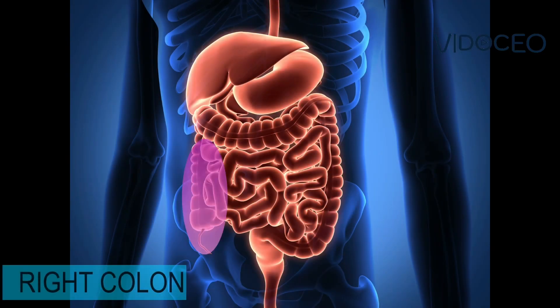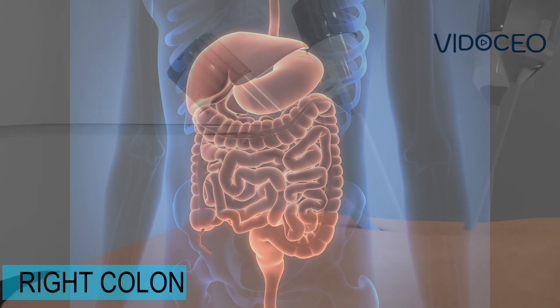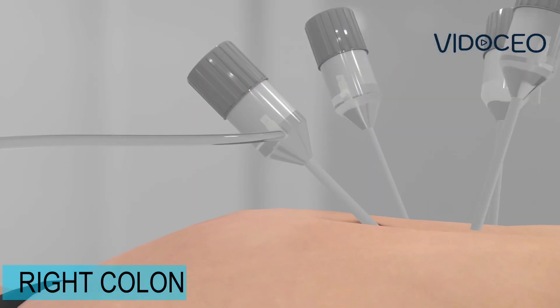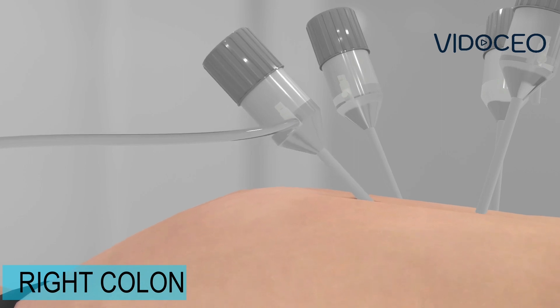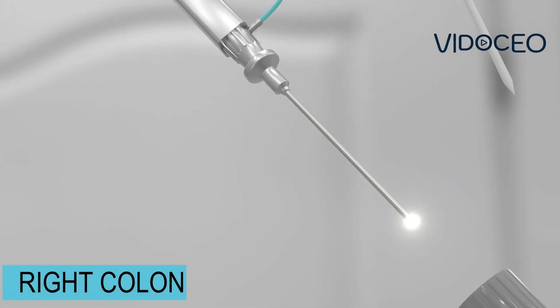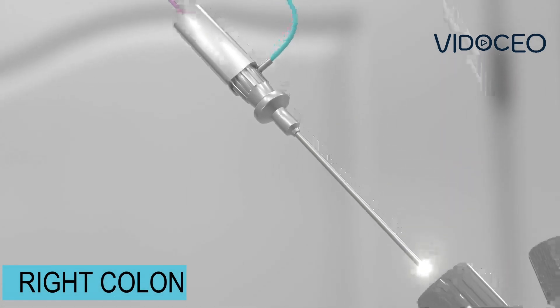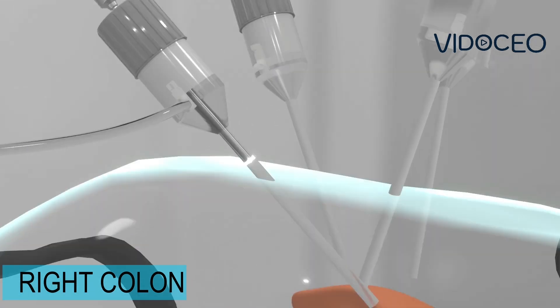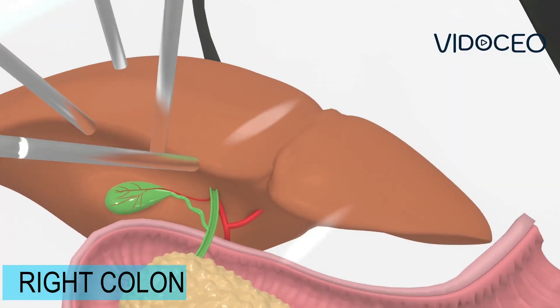In a laparoscopic right hemicolectomy, the patient will undergo general anesthesia before the surgery begins. The surgeon will make several small incisions in the abdomen, inflate the abdominal space with air, and insert specialized instruments, along with a tiny camera, to visualize the internal structures.